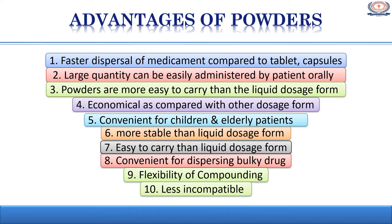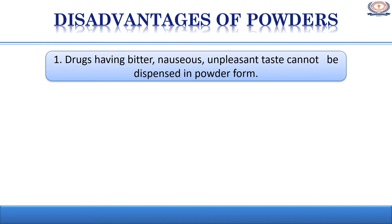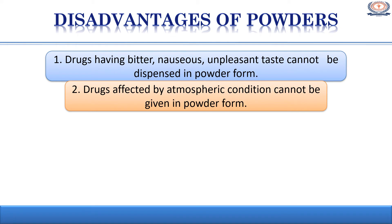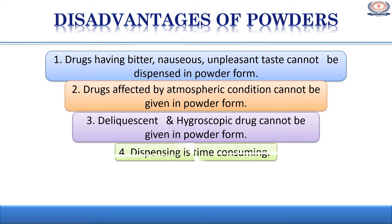These are some advantages of powder. The next are disadvantages of powders. The first disadvantage is that drugs having bitter, nauseous, or unpleasant taste cannot be administered or dispensed in the form of powders. Drugs affected by atmospheric conditions are not suitable for dispensing in powder form. Some deliquescent and hygroscopic drugs cannot be dispensed in powder form. The dispensing of powder is time consuming. These are some disadvantages of powder.